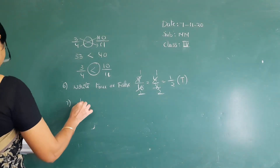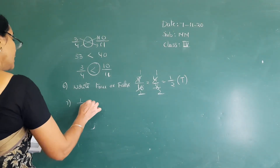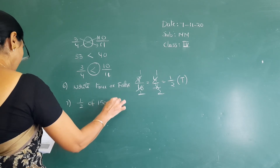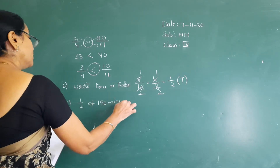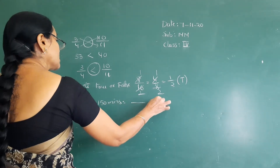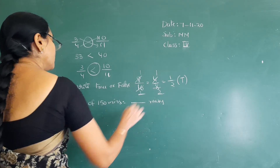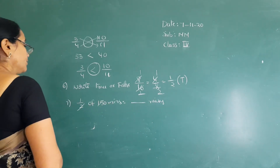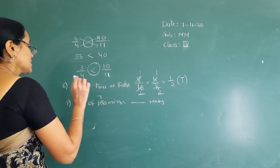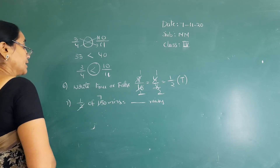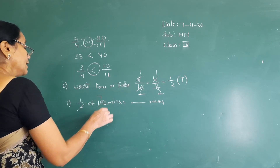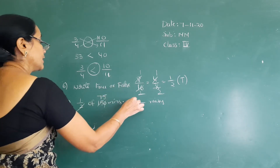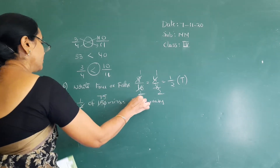See the seventh question: 1 by 2 of 150 units is equal to how many units? We have 150 and divide by 2. The answer is 75 units.